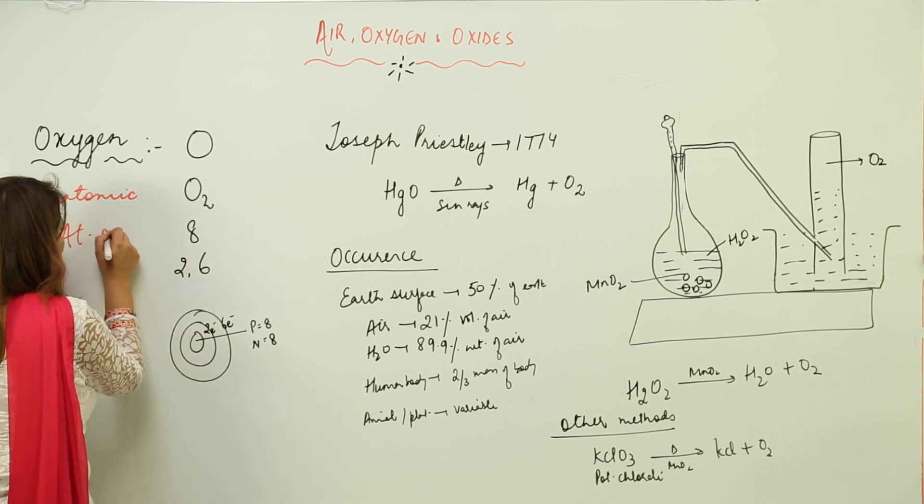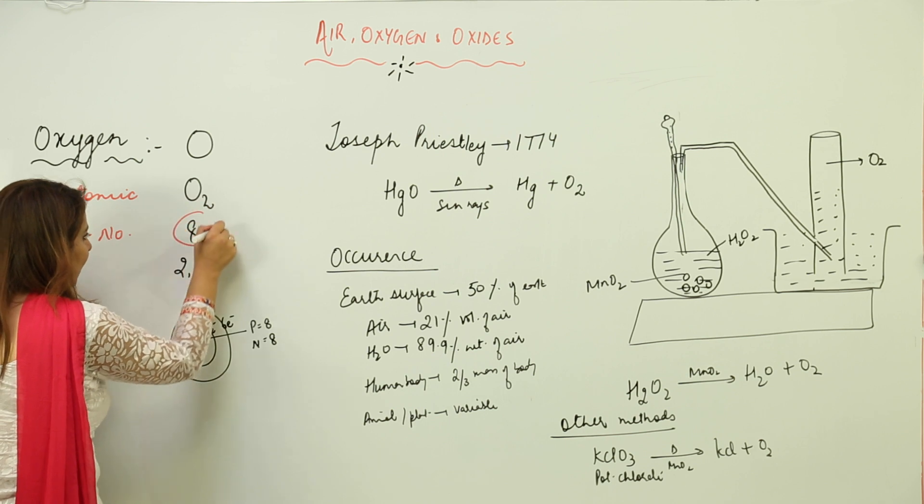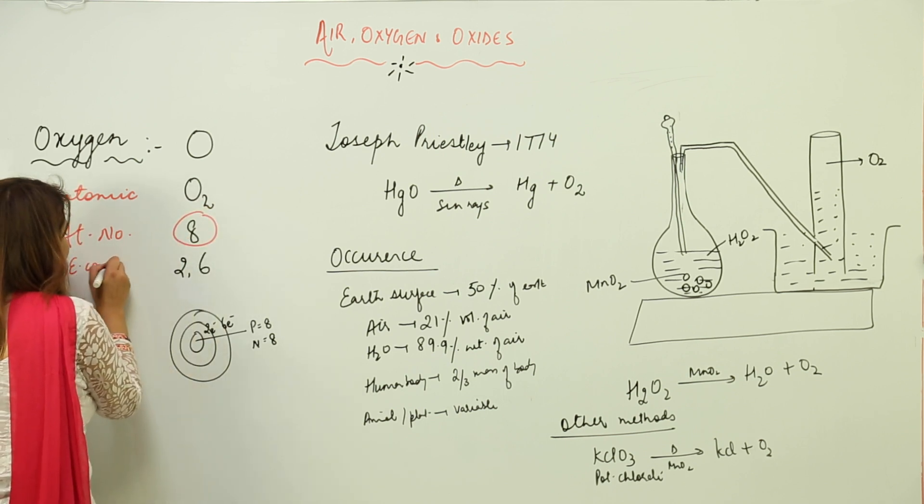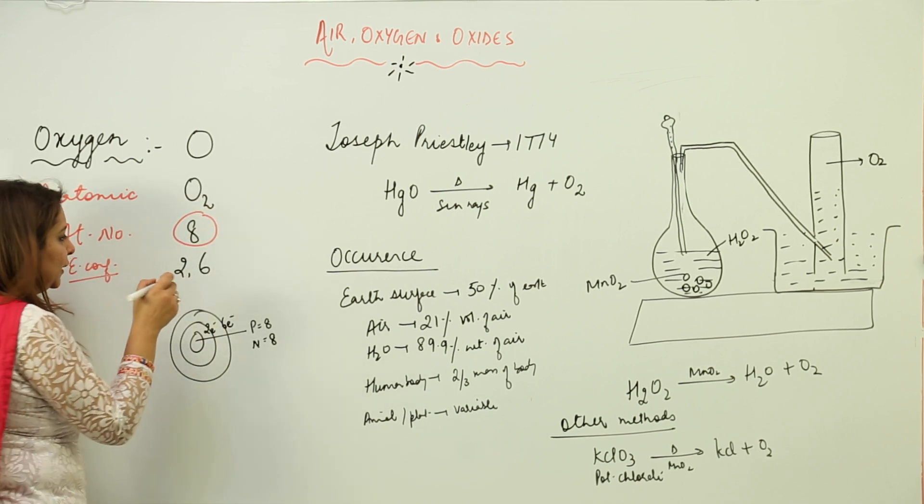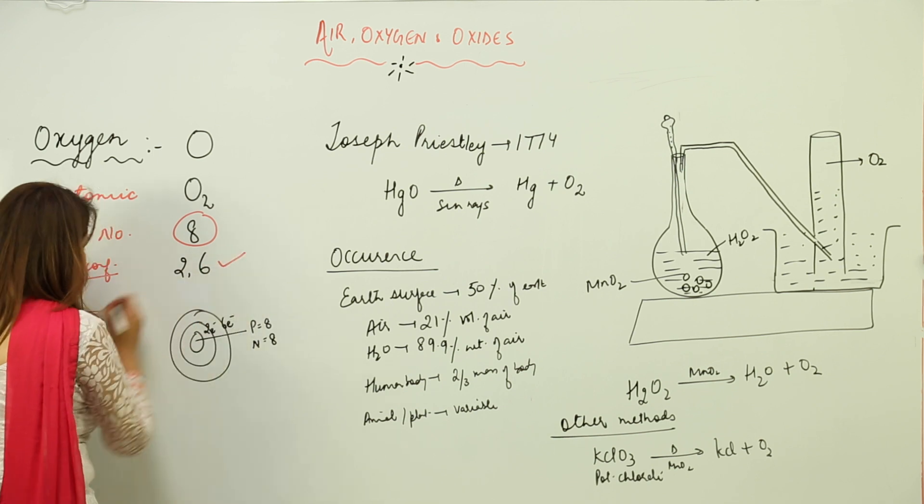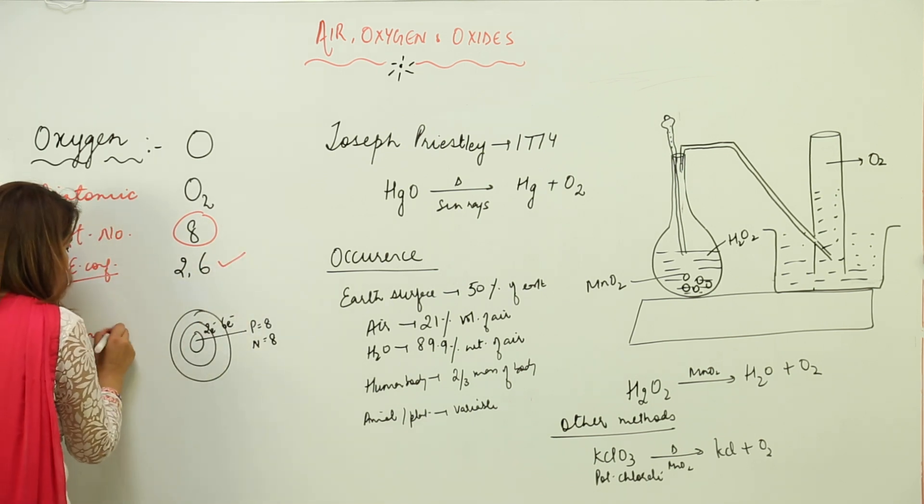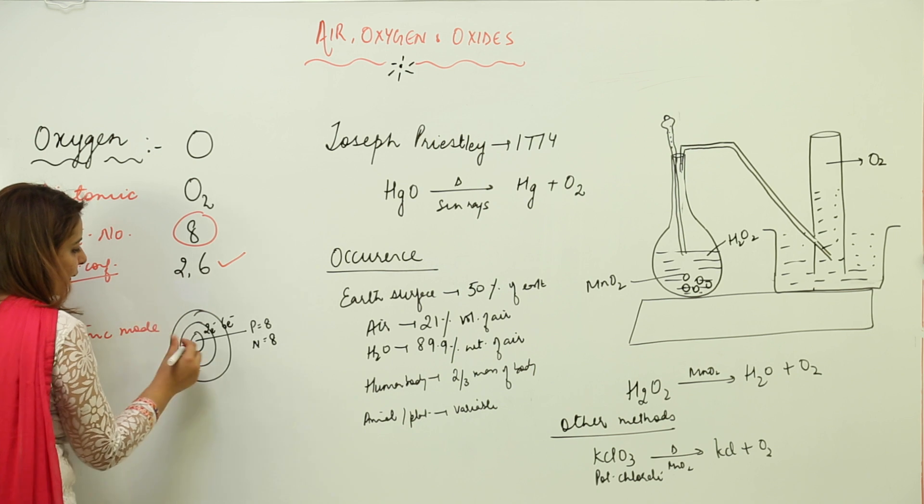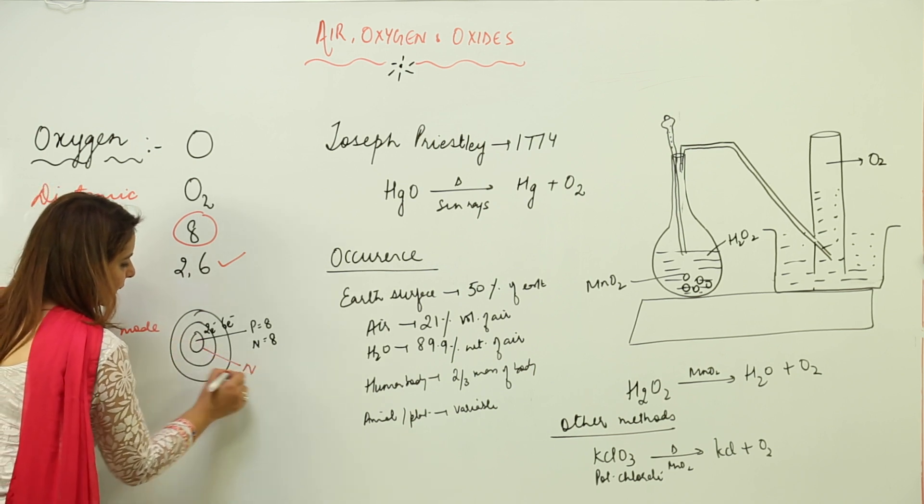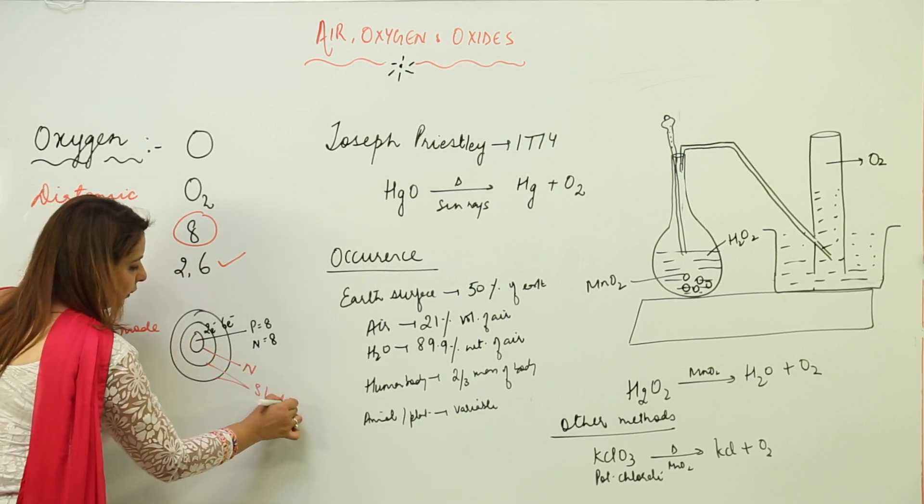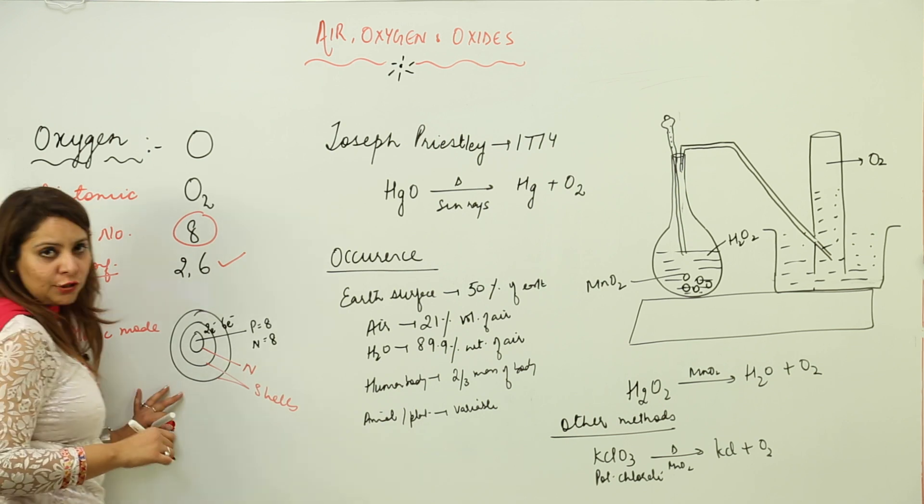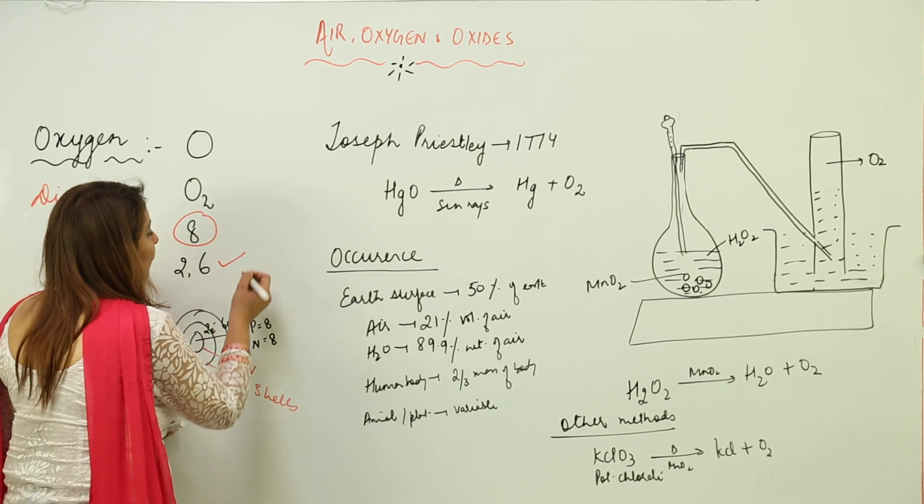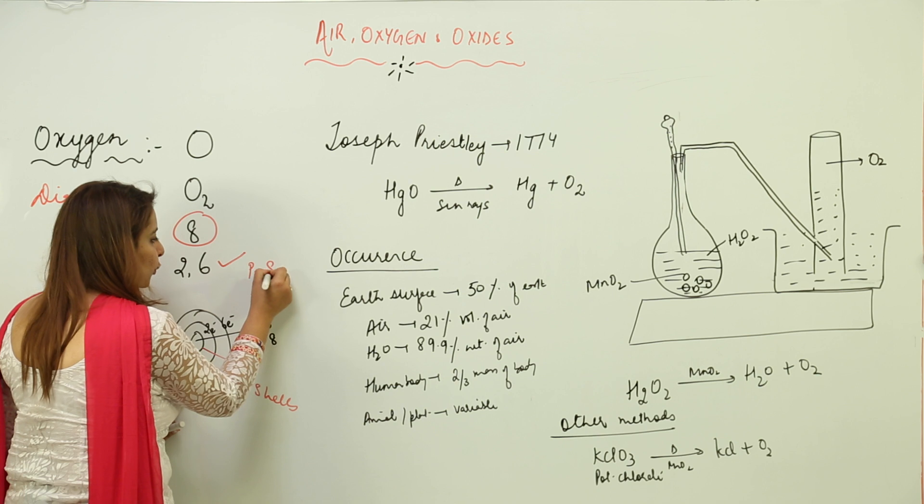If we look at the atomic number, the atomic number of oxygen is 8. The electronic configuration—that is, the arrangement of electrons—is 2, 6. And here is an atomic model in which there is a nucleus and these are shells.